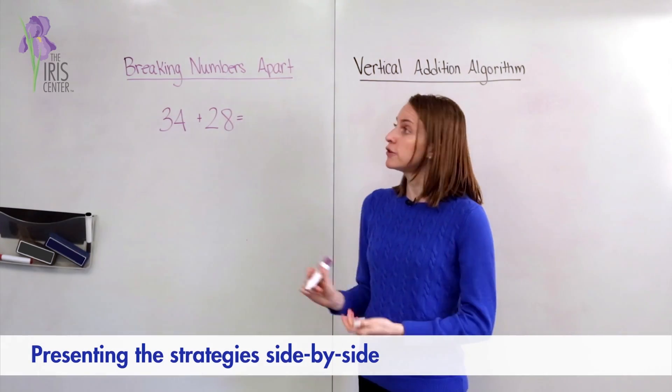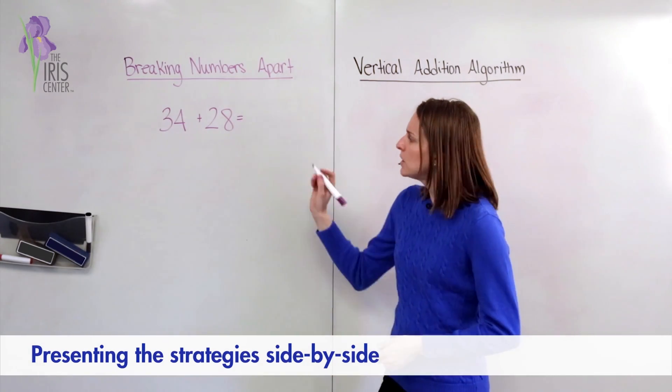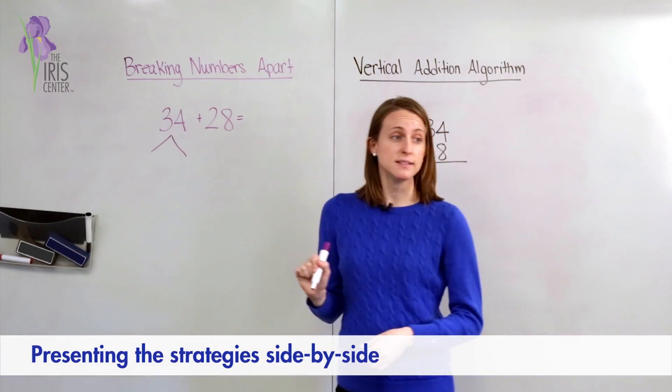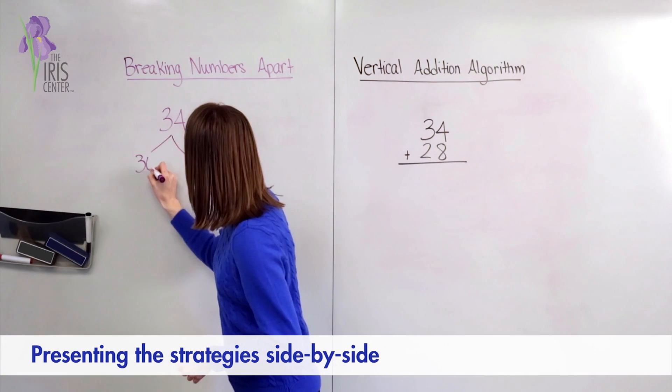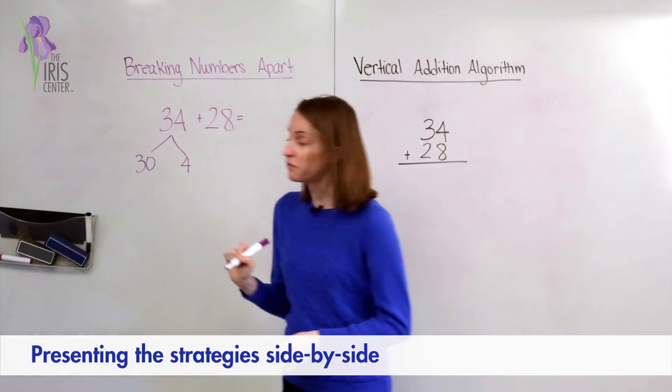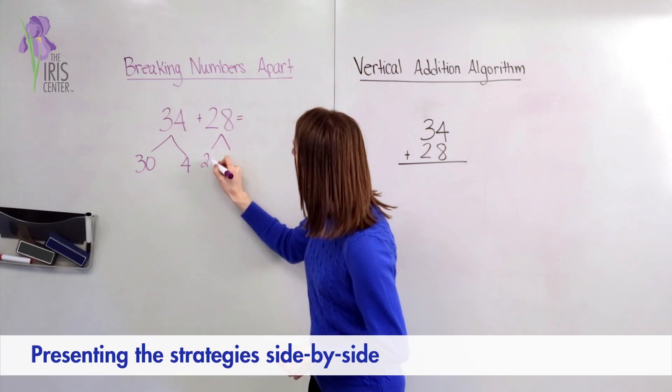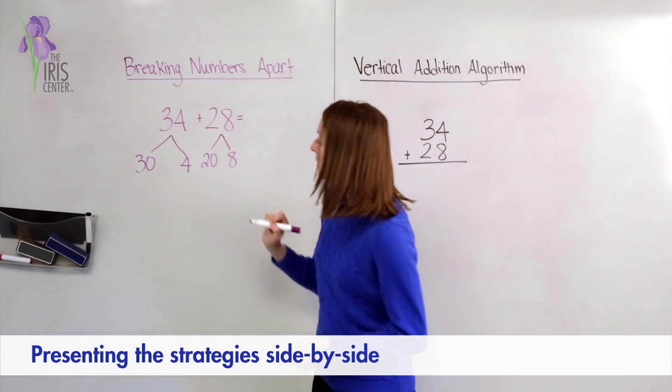Our problem is 34 plus 28. So to break the numbers apart, you want to break the numbers apart into the tens and the ones. So 34 breaks apart into 30 and 4, and then the number 28 breaks apart into the number 20 and 8.